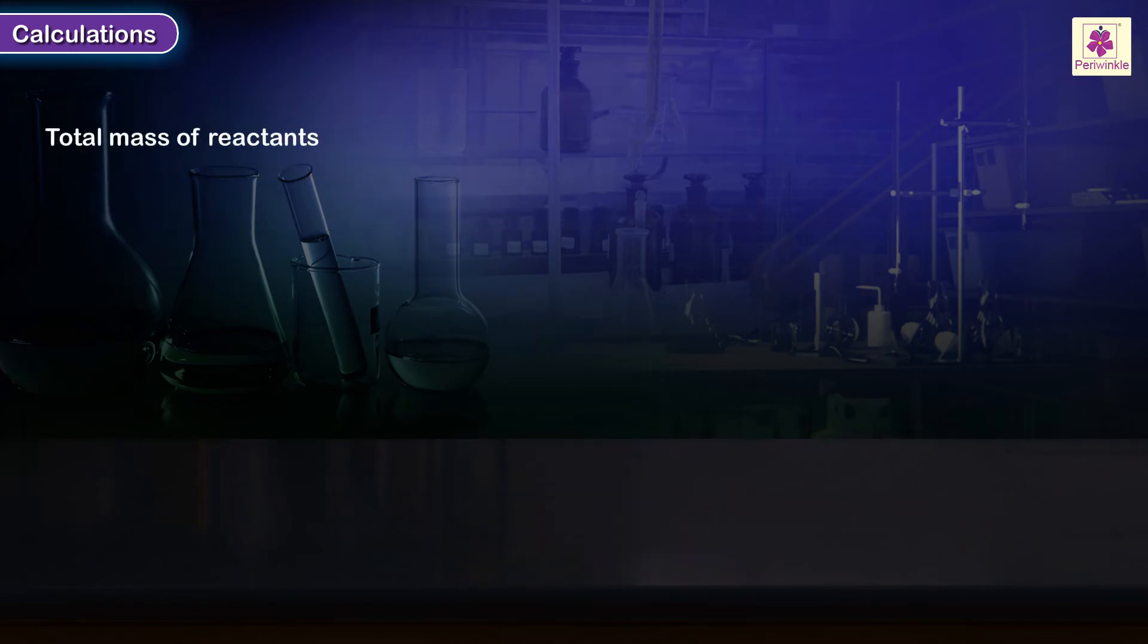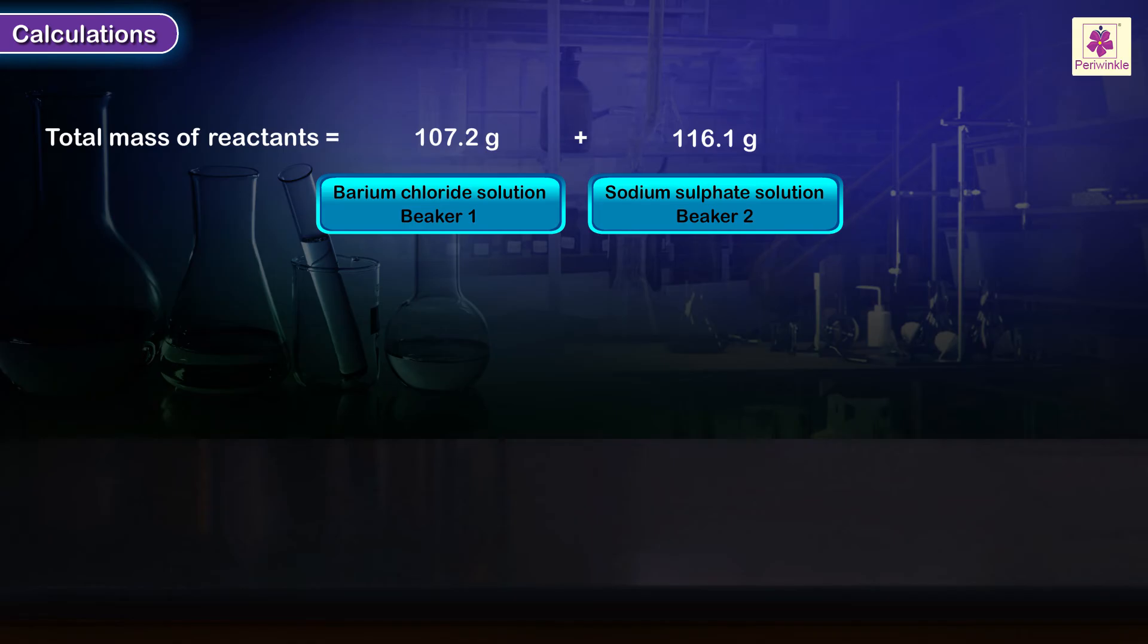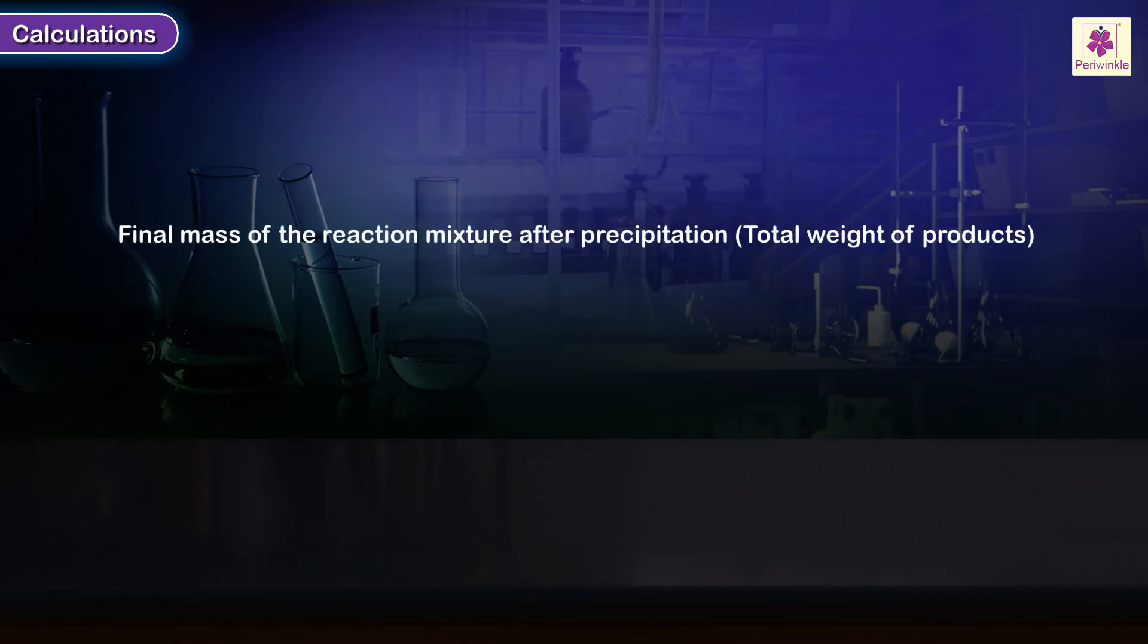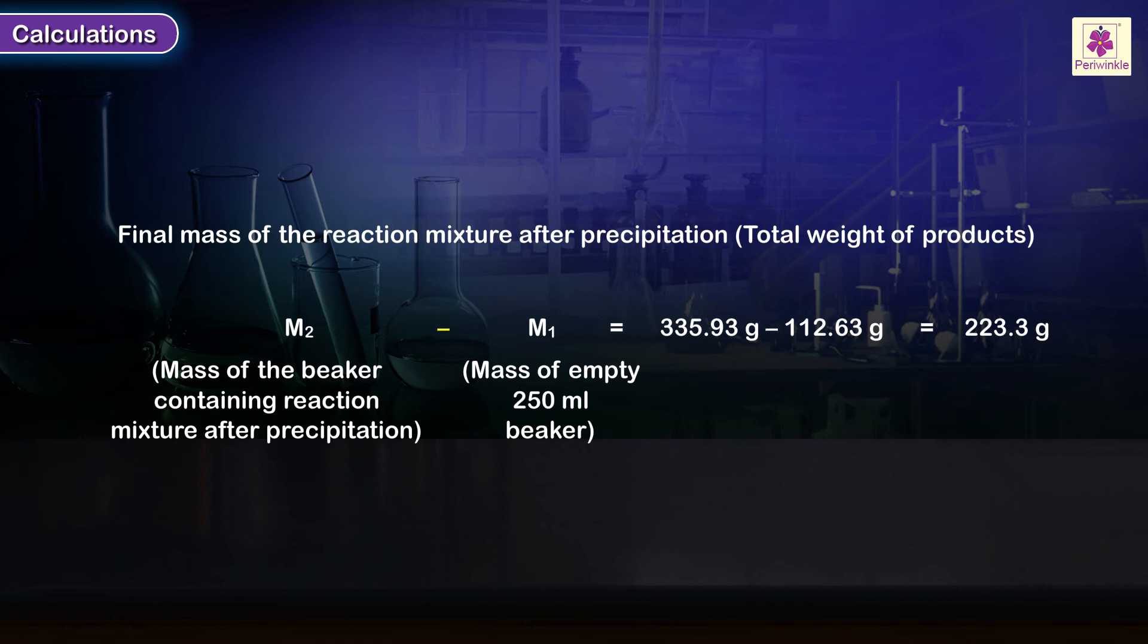Total mass of reactants equals 107.2 grams plus 116.1 grams, which equals 223.3 grams. Final mass of the reaction mixture after precipitation equals M2 minus M1, which equals 335.93 grams minus 112.63 grams, equals 223.3 grams.